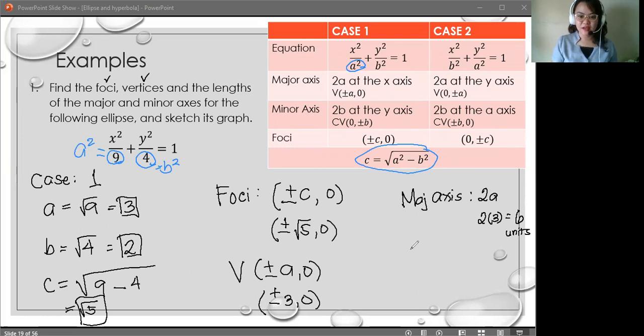Next, for the minor axis, we have 2b. And the value of b here is 2. So we have 2 times 2, and you'll get 4 units.